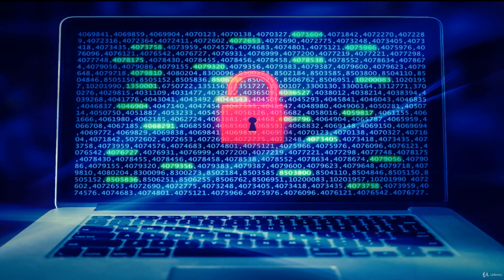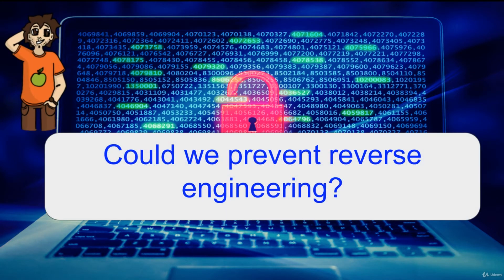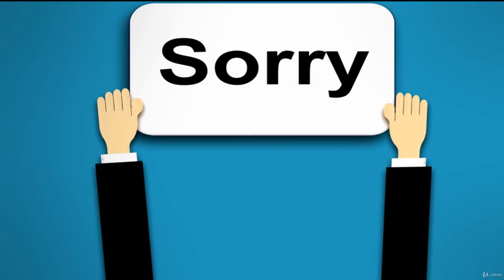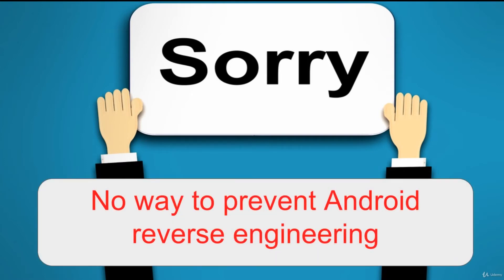A question many people ask: could we prevent reverse engineering — prevent anyone from taking our APK and converting it to source code? Unfortunately, there is no way to fully prevent Android applications from reverse engineering. This is because Android uses the Linux kernel, which is open source, so your Java application has to remain accessible so it can run and execute in the kernel sandbox. You cannot prevent people from converting your APK to source code.